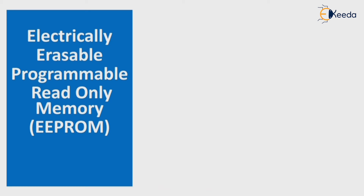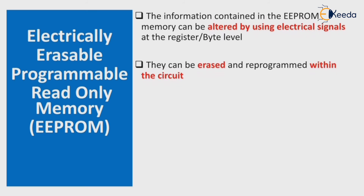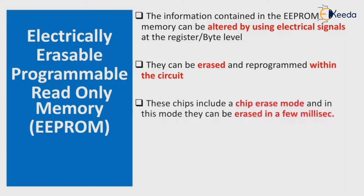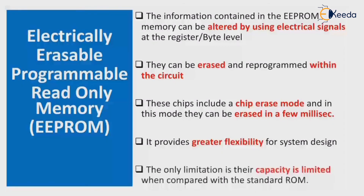Next is Electrically Erasable Programmable Read-Only Memory, or EEPROM. The information in EEPROM can be altered using electrical signals — it can be erased and reprogrammed within the circuit. These chips include a chip erase mode, and in this mode they can be erased in a few milliseconds, without needing to expose them to ultraviolet rays. It provides greater flexibility for system design. The only limitation is that its capacity is limited compared to standard ROM.